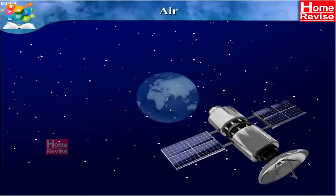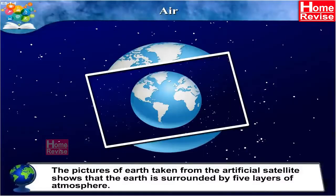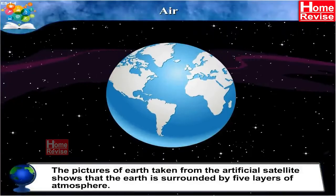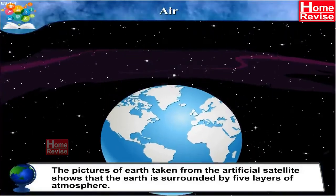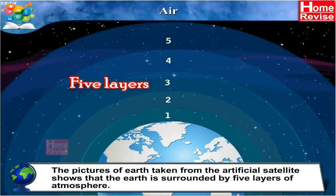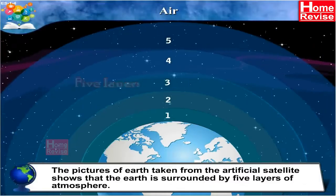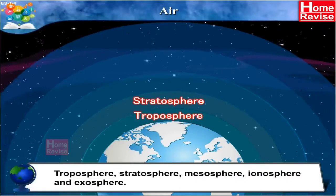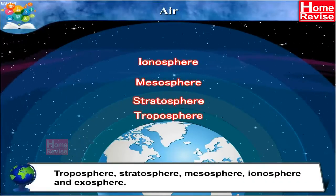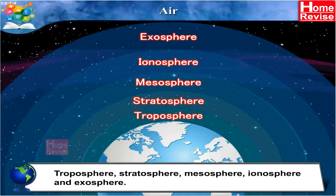Air. Students, pictures of Earth taken from artificial satellites show that the Earth is surrounded by five layers of atmosphere: troposphere, stratosphere, mesosphere, ionosphere and exosphere.